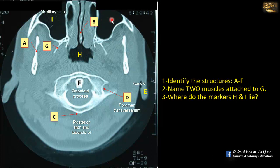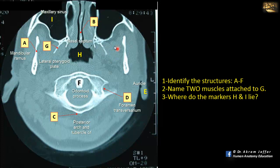The maxillary air sinus is located on the lateral side of the nose. In the midline is the nose, and in the middle of the nose is the nasal septum (B). Behind the maxilla, you can see the medial and lateral pterygoid plates. G is the lateral pterygoid plate, and A is the ramus of the mandible. This region is the infratemporal fossa. H is the space located behind the nose; below the cranial cavity, behind the nose, this space is the pharynx — specifically the nasopharynx.